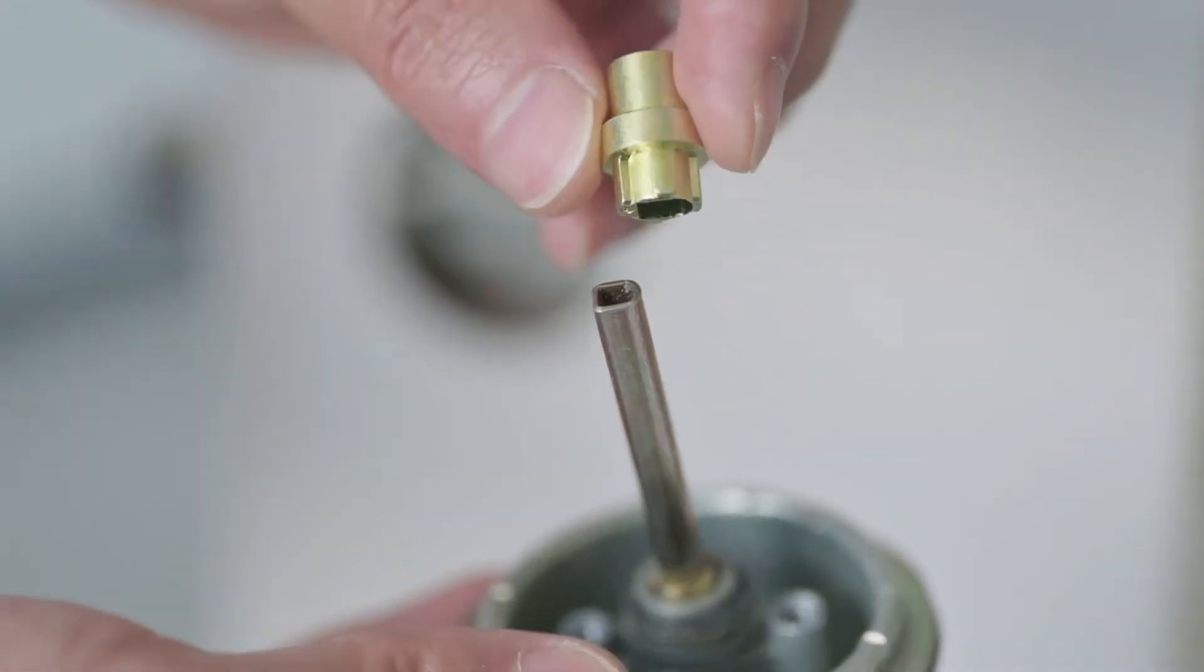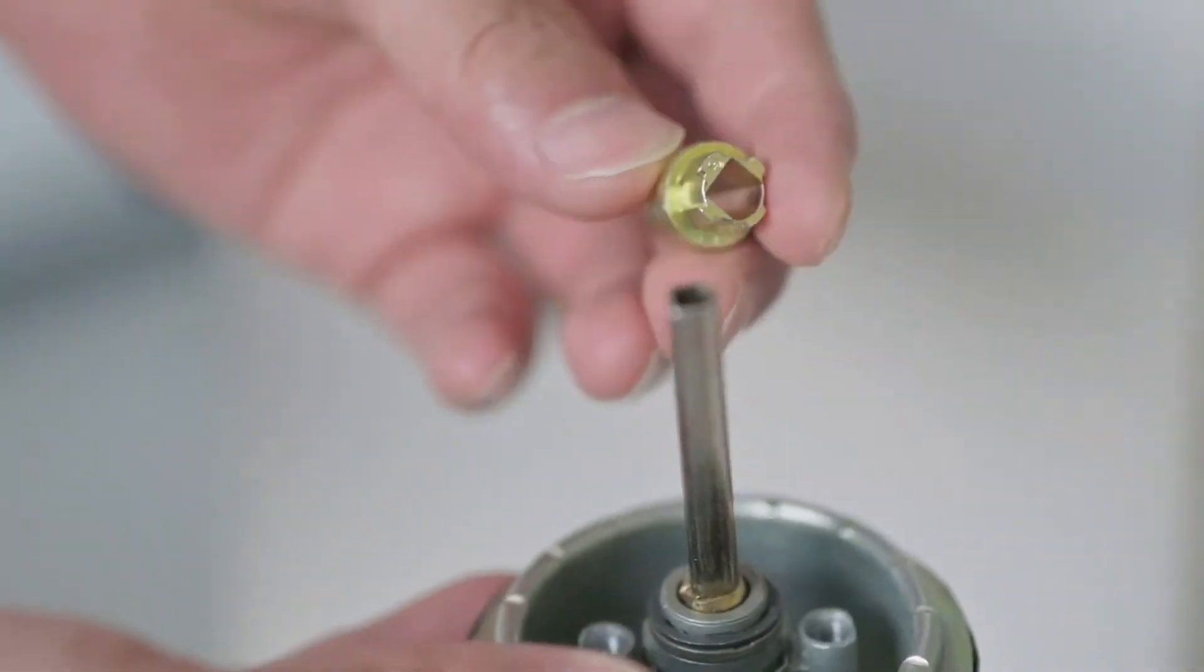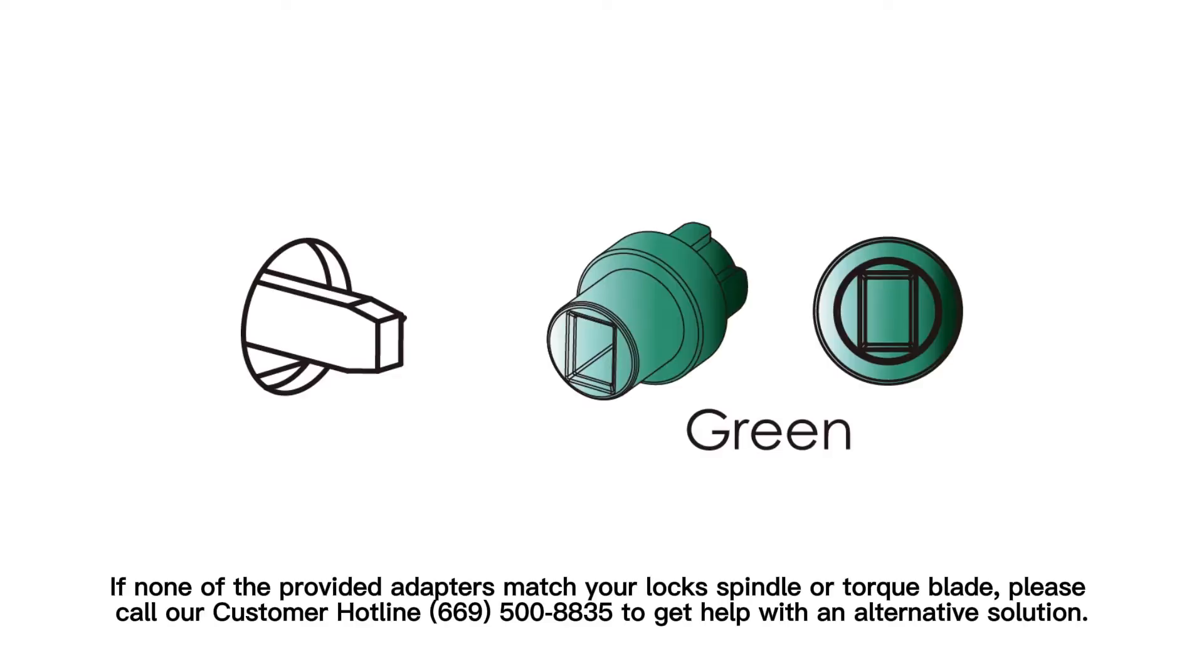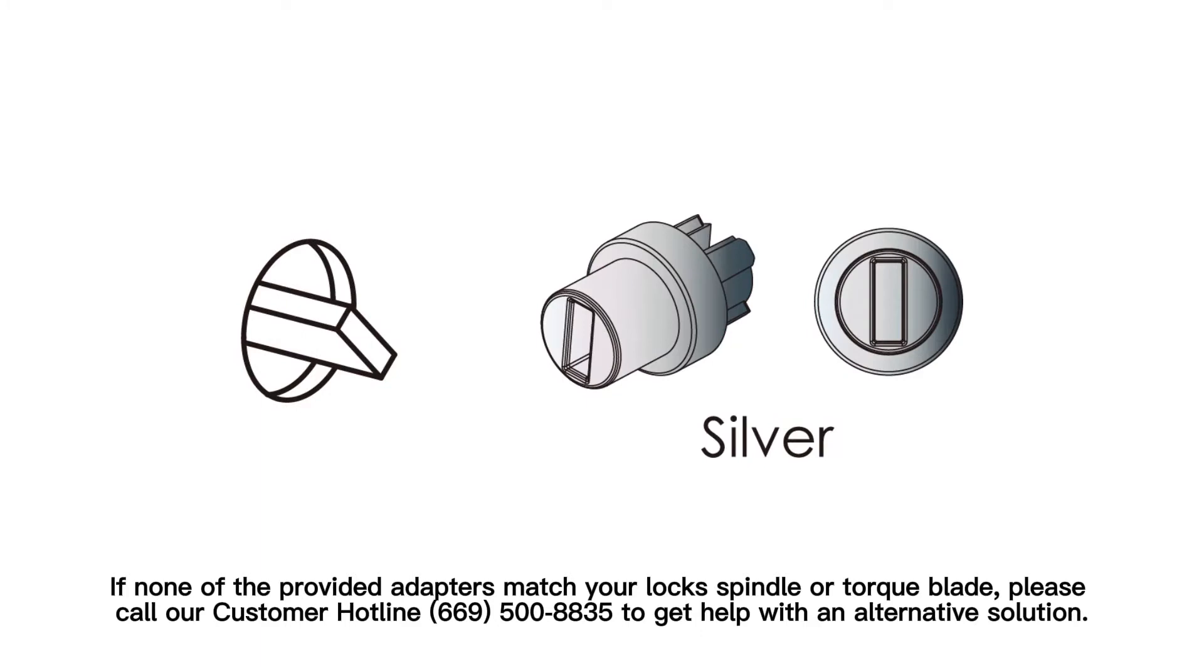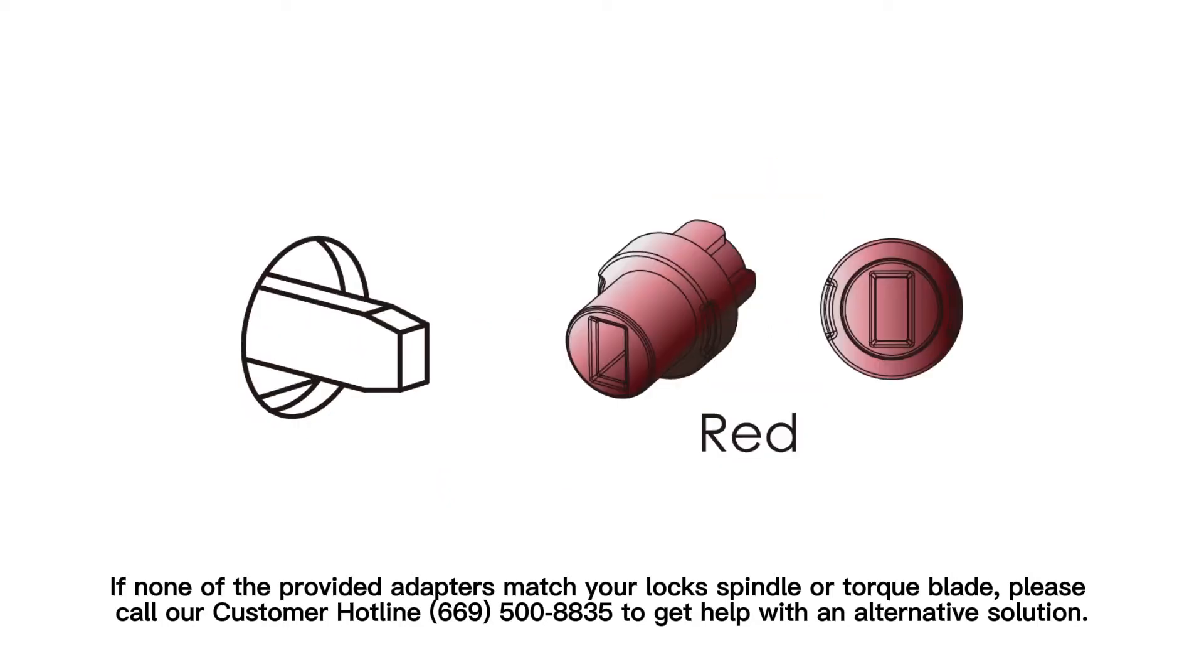Installing the interior assembly: Identify and select the appropriate spindle/torque blade adapter that matches your lock. If none of the provided adapters match your lock spindle or torque blade, please call our customer hotline 669-500-8835 to get help with an alternative solution.